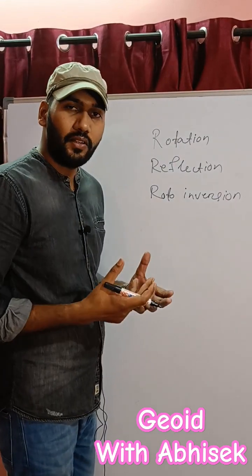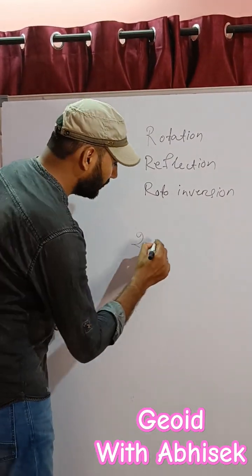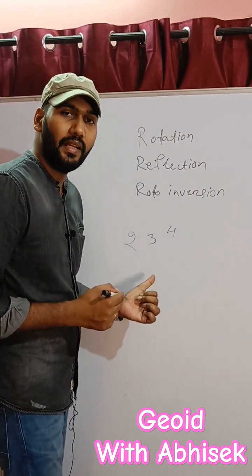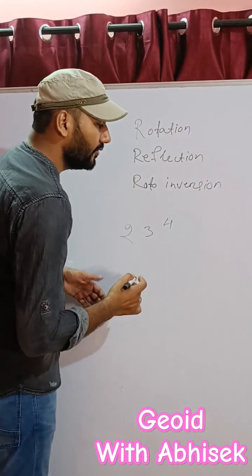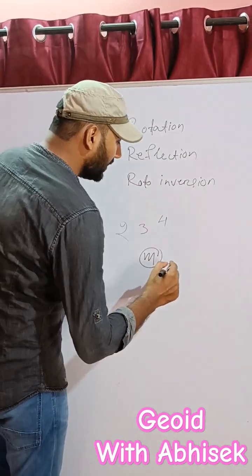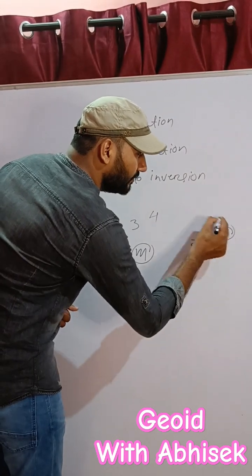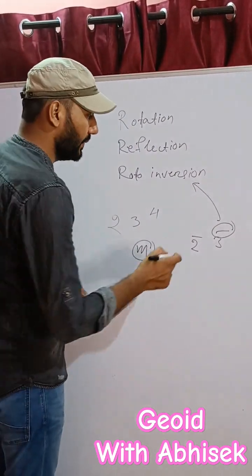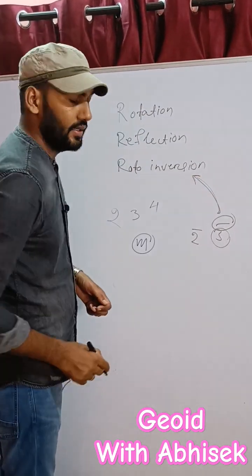In the symbols of any class, we either write digits like 2, 3, 4 — this represents the rotation axis — or we use M for mirror planes, and we use 2-bar, 3-bar; this bar is used for the inversion symmetry or rotoinversion symmetry, meaning threefold rotation plus inversion, i.e., rotoinversion symmetry.